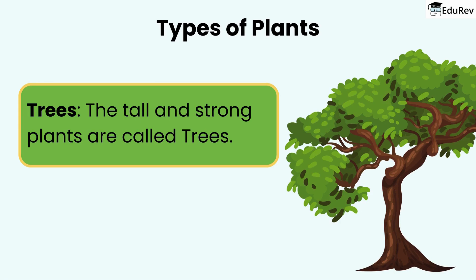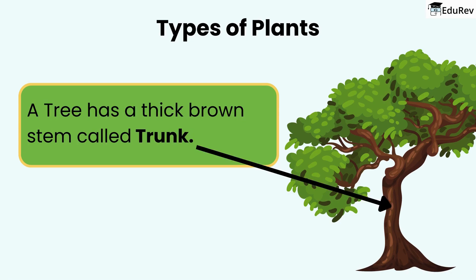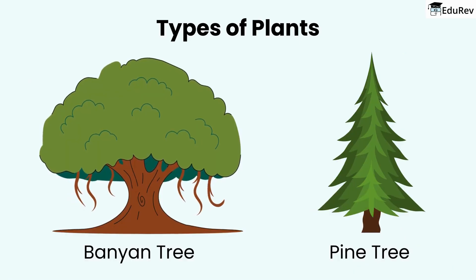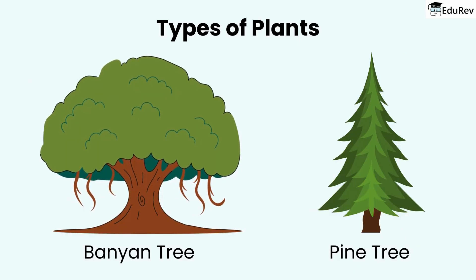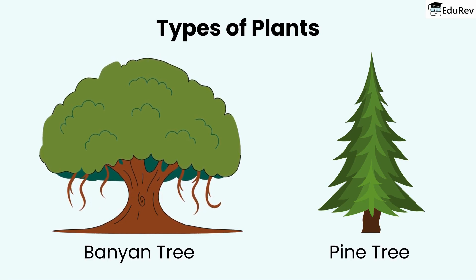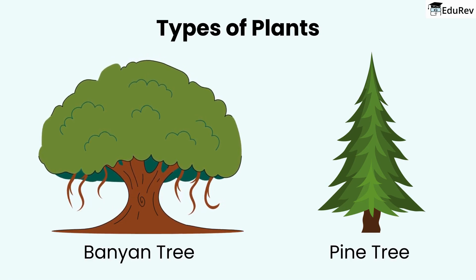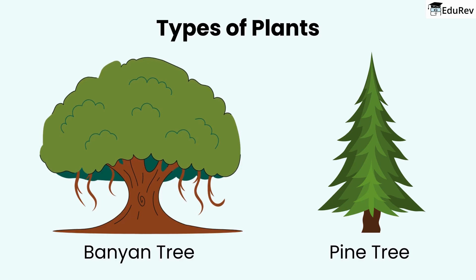Now, let's talk about the types of plants. The tall and strong plants are called trees. A tree has a thick brown stem called a trunk. Trees come in different sizes and shapes. For example, the banyan tree is thick and the pine tree is cone-shaped.